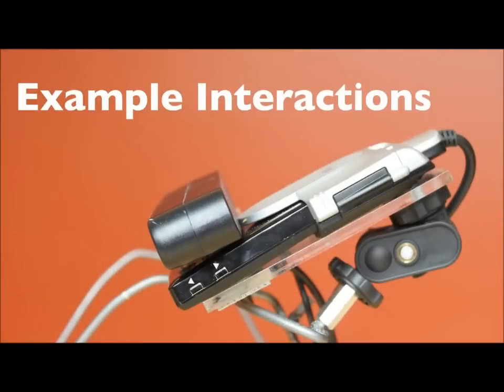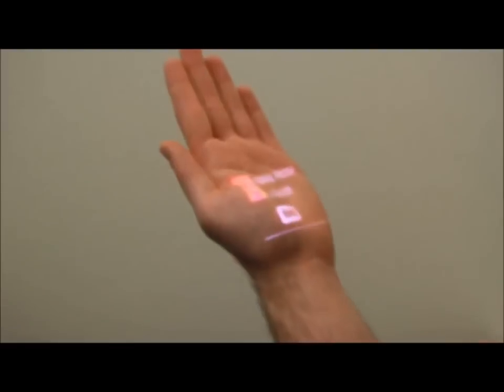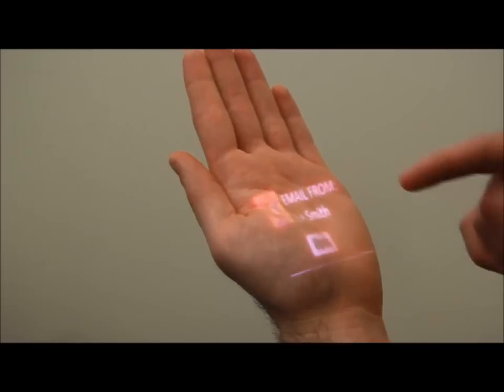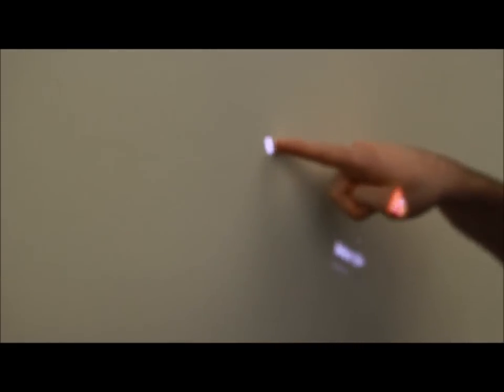To showcase our system's capability, we developed numerous demonstration applications. In this example sequence, a user is alerted to a new email. They are prompted to open the message and then select an area for viewing. Rather than viewing the message on the small confines of the hand, the user instead approaches a nearby wall and defines a region for the email to appear.